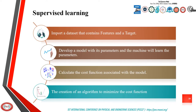The first steps necessary to solve a supervised learning problem are as follows. The first step is to import a dataset that contains a feature and a target. The second step is to develop a model with its parameters and the machine will learn the parameters. The third step is to calculate the cost function associated with the model, and the fourth step is the creation of an algorithm to minimize the cost function.